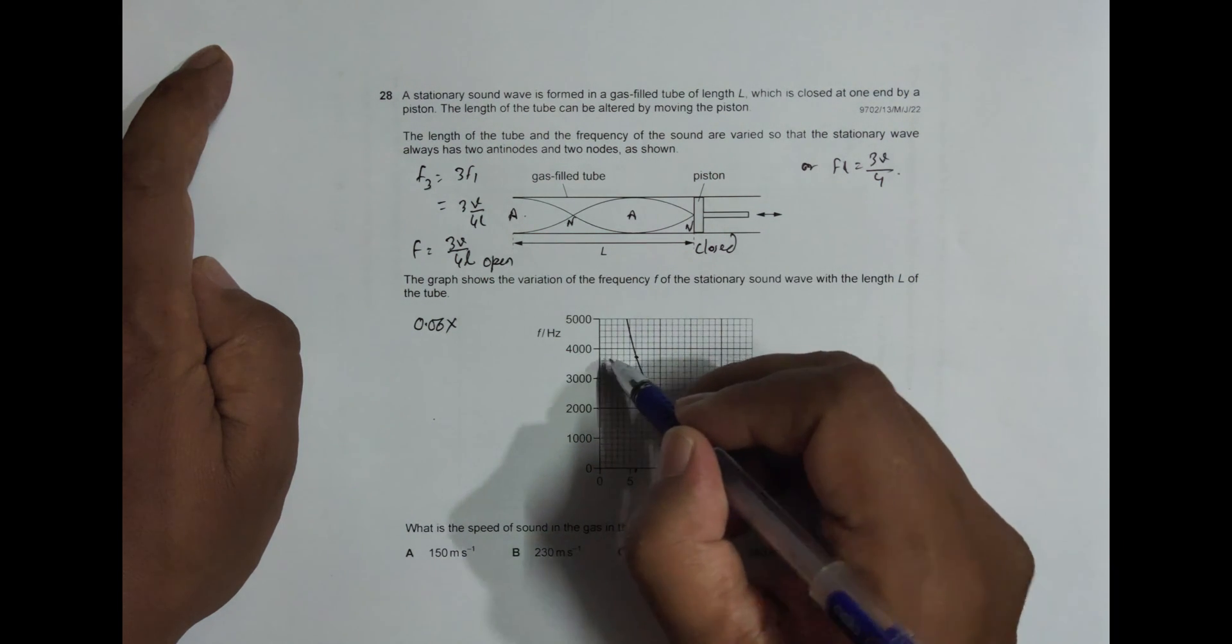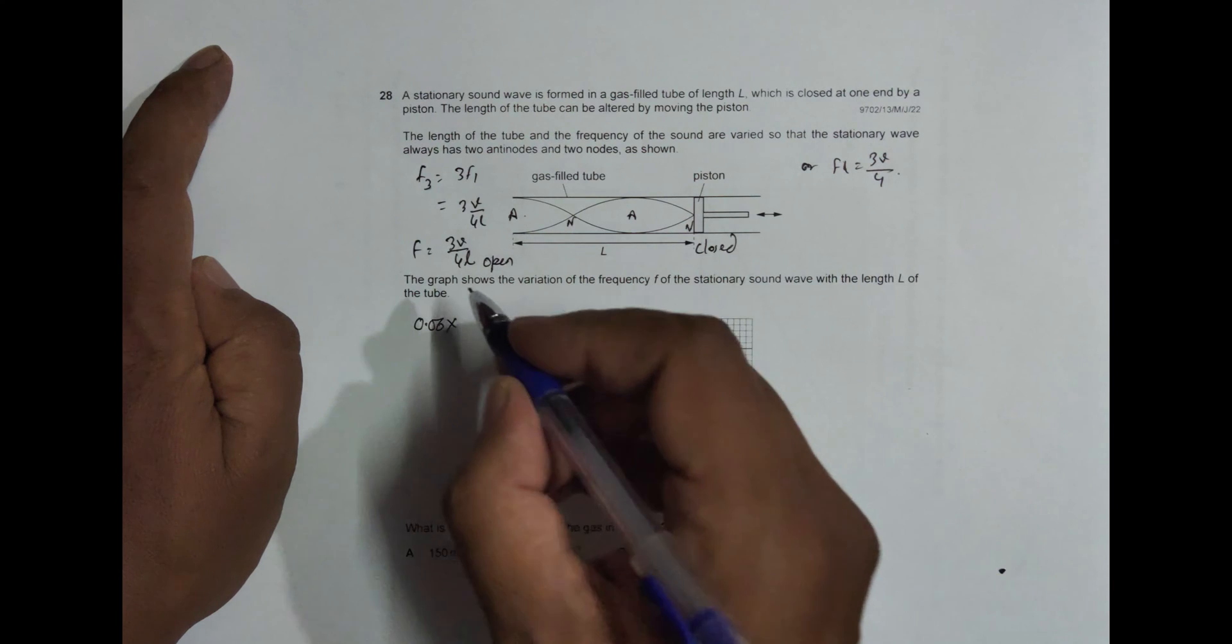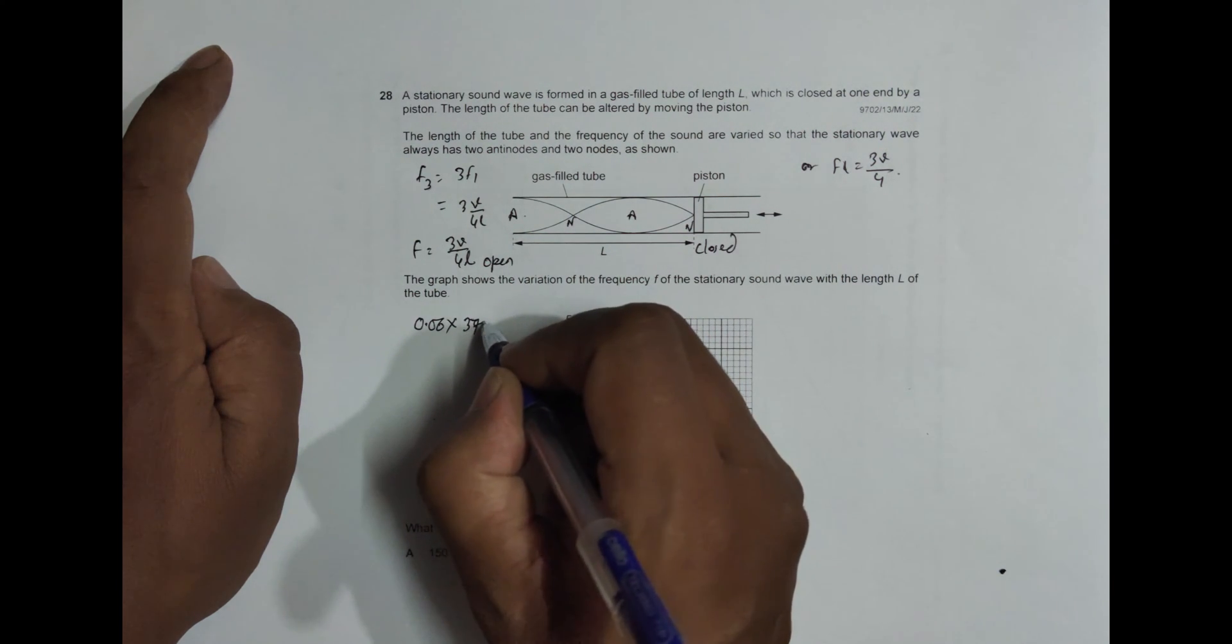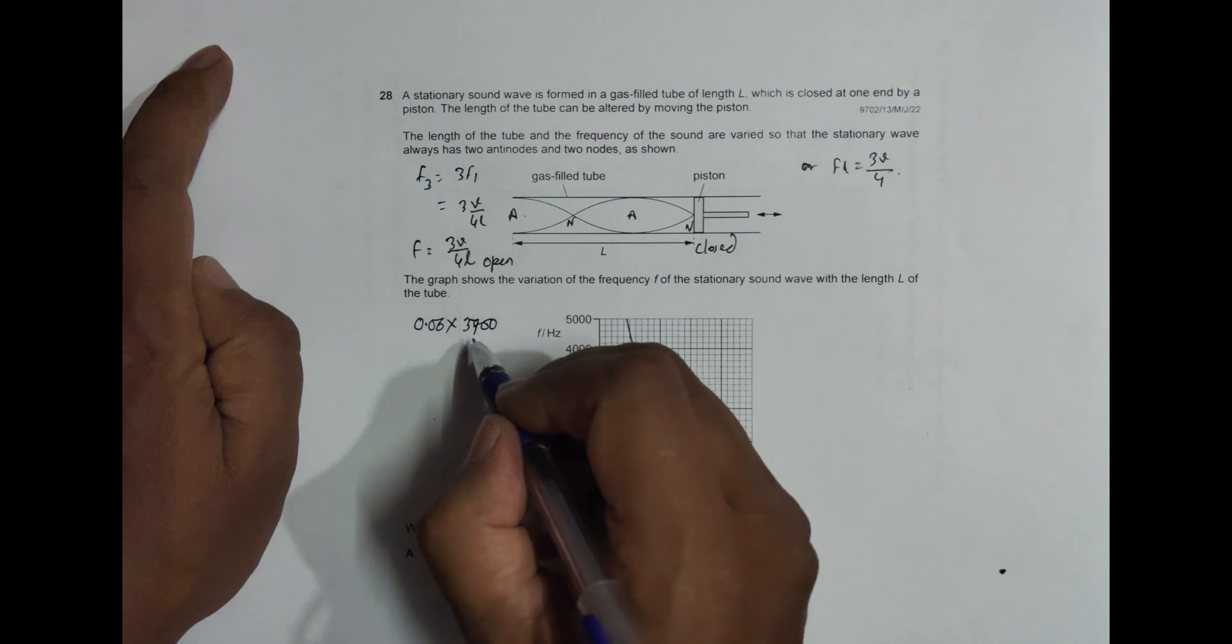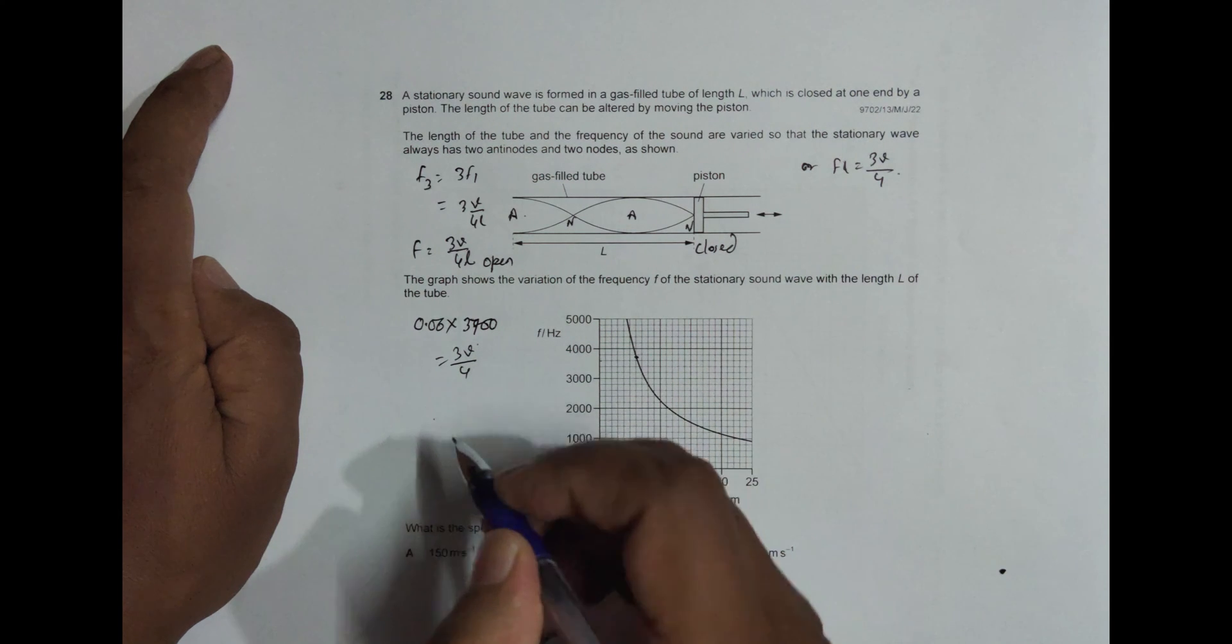0.06 into the 3700. So when I do this, it should be equal to 3700. So this is F times L equal to 3V by 4.